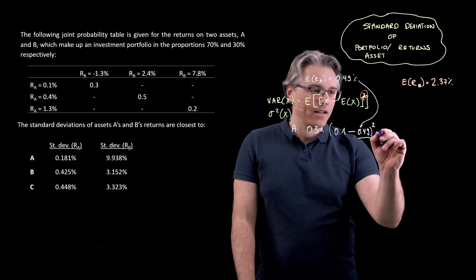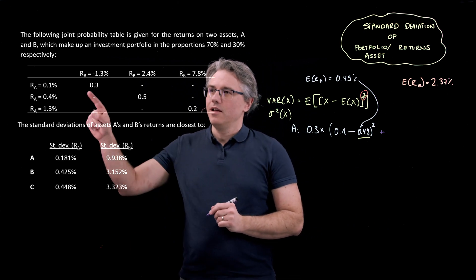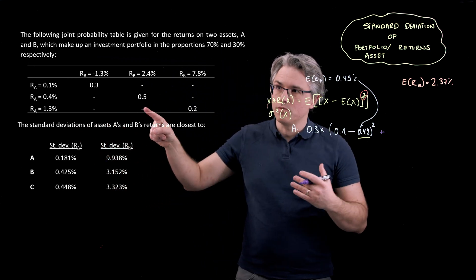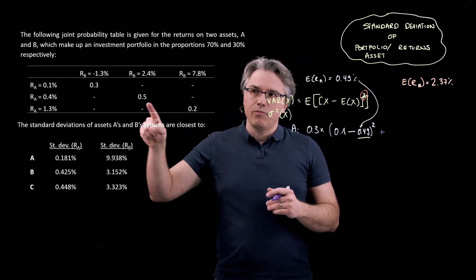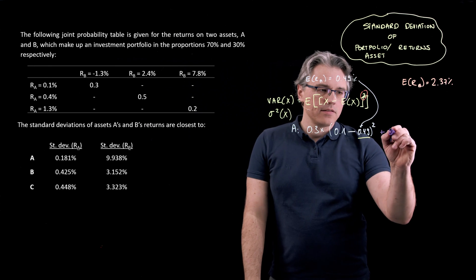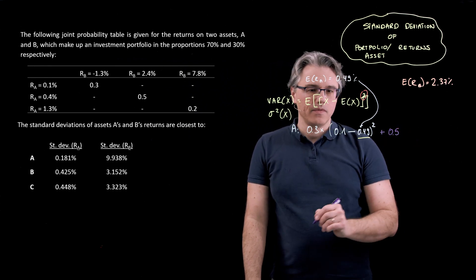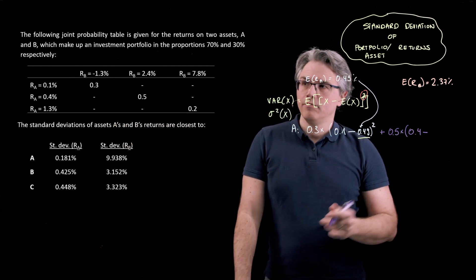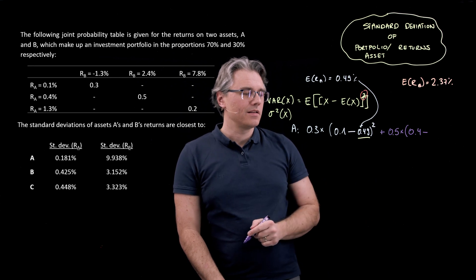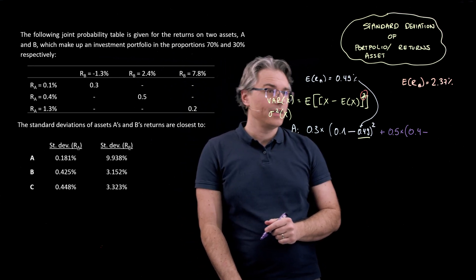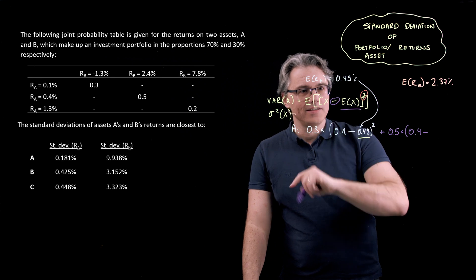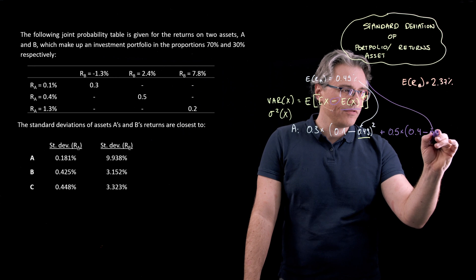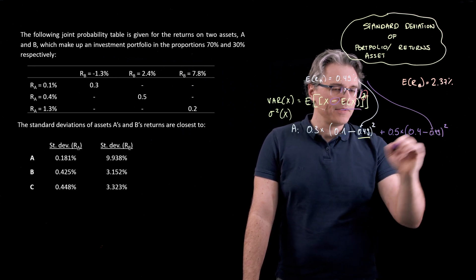Now, to this, we add the next one. The next observation, which is 0.4%, or the next possible value, has a probability of occurring of 50%. So that's 0.5 times, once again, that value, which is 0.4, I'm omitting the percent, minus 0.49 again, because we always deduct the expected return, which is constantly 0.49. And we square that one.